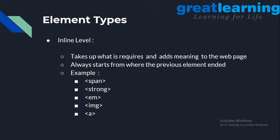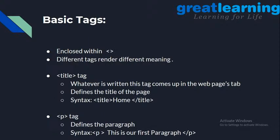Inline tags we've seen include: strong, emphasis, span, anchor, and image tags. Now let's move ahead and talk about some basic tags. Everything enclosed within angle brackets is called a tag. Different tags render different meanings — paragraph does paragraph things, strong makes bold text, emphasis makes text italic. No two different tags do the same thing.